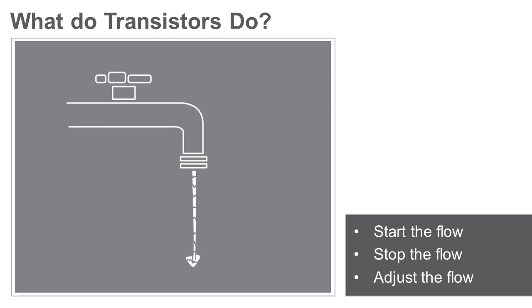In this way, a transistor is similar to a faucet. But instead of controlling the flow of water, a transistor controls the flow of electrical current.